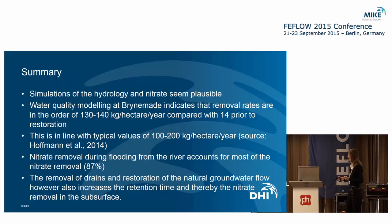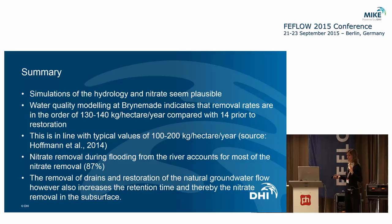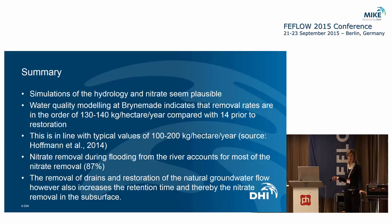In summary, the model is able to simulate the hydrology and the nitrate, though we are slightly underestimating nitrate removal. Evidence from observations indicates that all the nitrate is removed before reaching the river, meaning removal rates are in the order of 130 to 140 kilograms per hectare per year — broadly in line with values from the Danish Agricultural Institute of about 100 to 200 kilograms per year published last year. The model also shows that nitrate removal during flooding from the river accounts for most of the nitrate removal — about 90% — and that removal of drains and restoration of natural groundwater flow increases retention times and thereby nitrate removal in the subsurface.